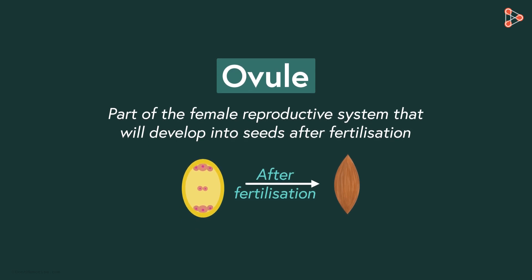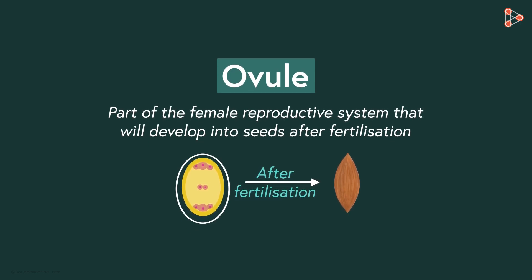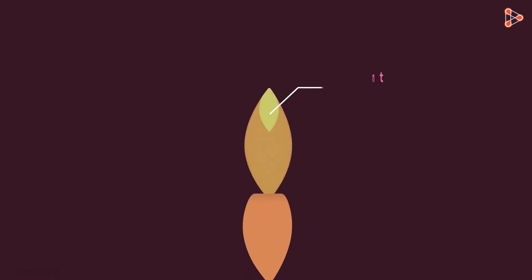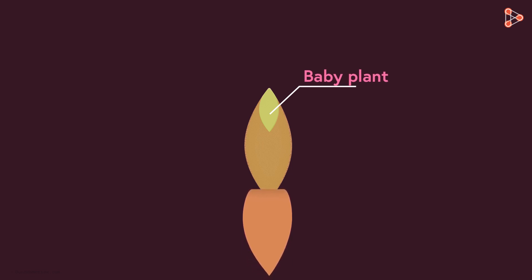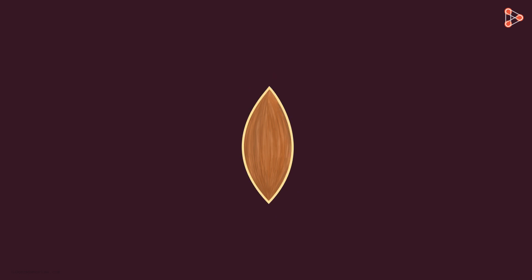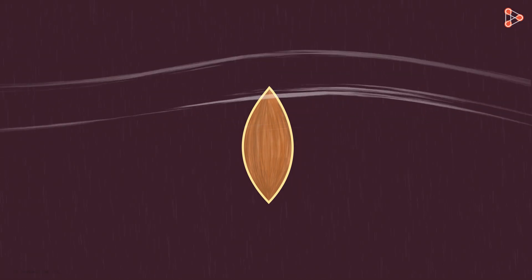This is all we need to know for now — we will get into the structure and functions of the ovule in higher grades. Getting back, the ovule forms the seeds, which is a structure containing the embryo — the baby plant — inside it. A baby plant that is yet to develop needs utmost protection. That is why we have the seed. A seed remains safe and guarded by a seed coat, which protects the inner delicate parts and the embryo during unfavorable conditions.